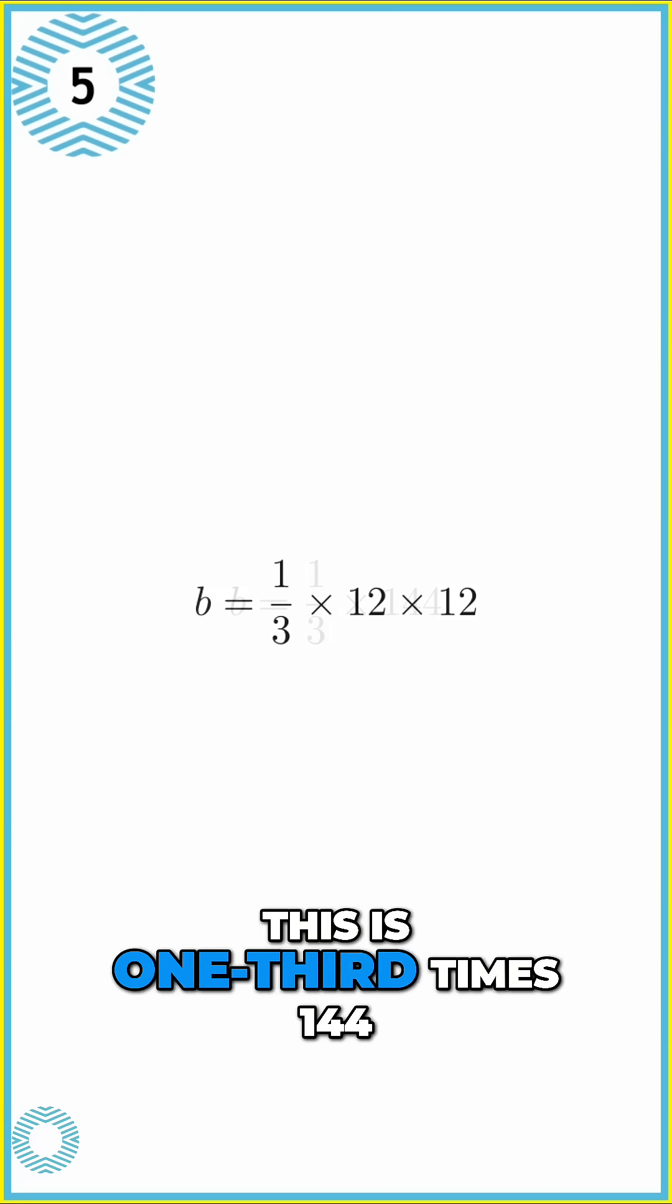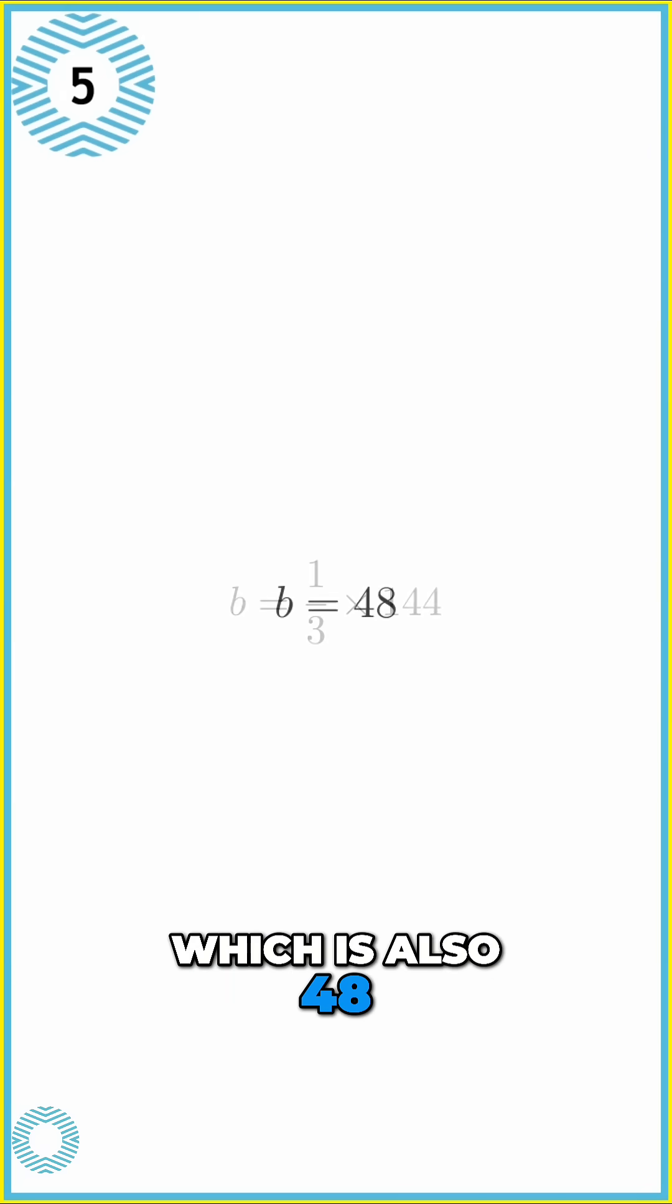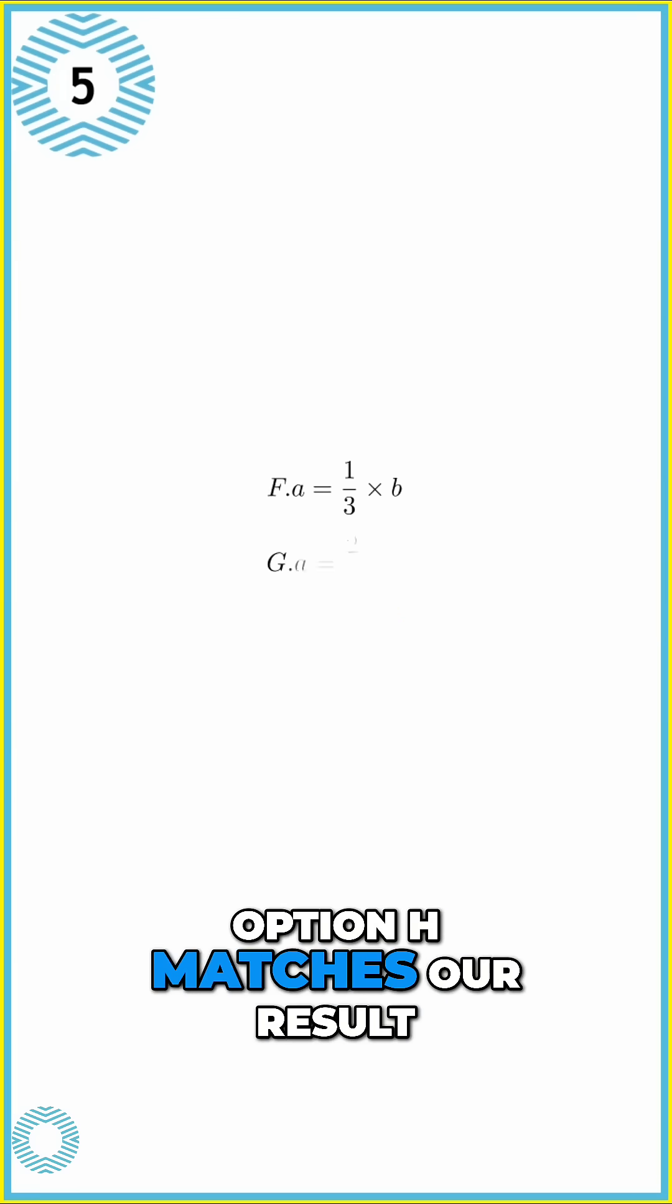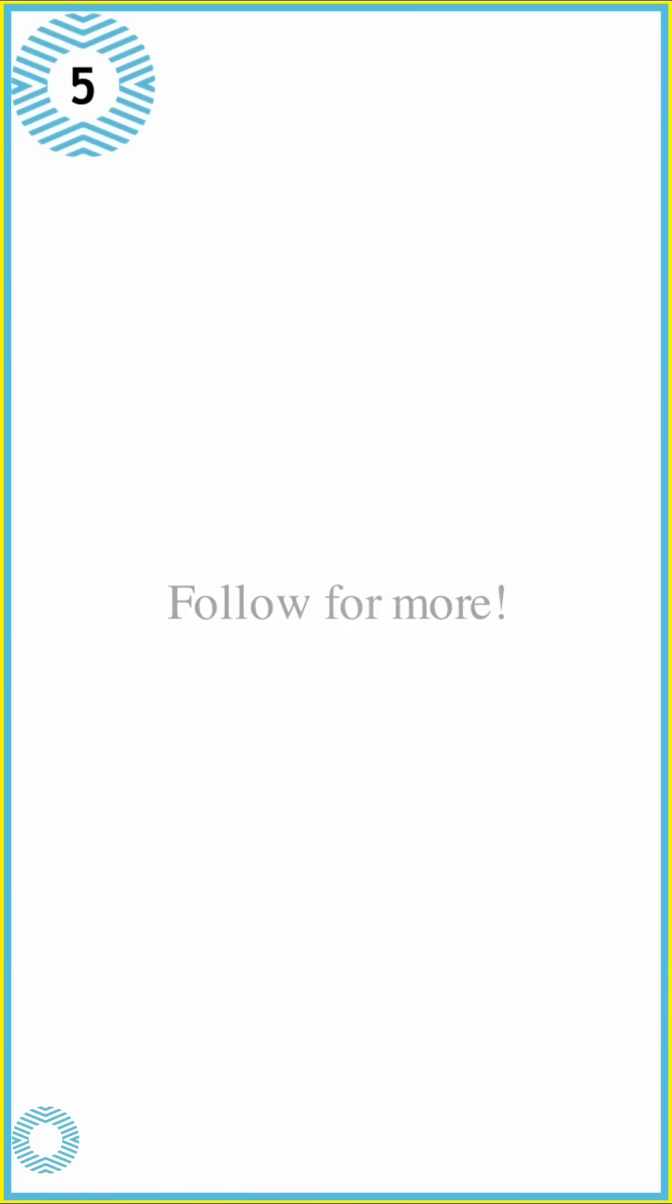Just like before, this is one-third times 144, which is also 48. So B is 48. We found that A equals 48 and B equals 48. Therefore, A equals B. Looking at the options, option H matches our result. Follow for more thorough breakdowns for ACT Math.